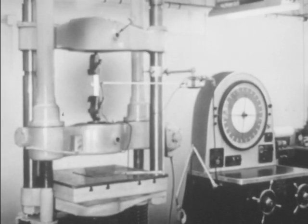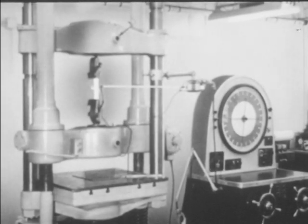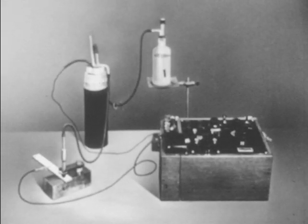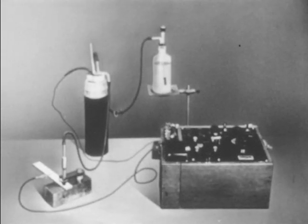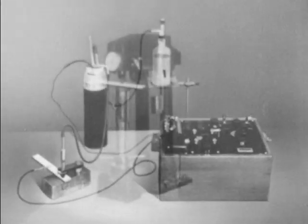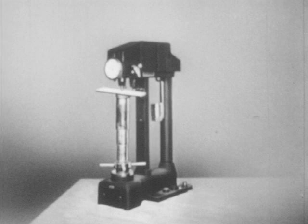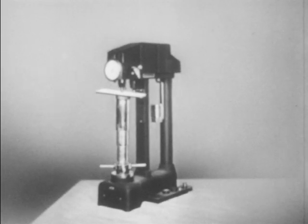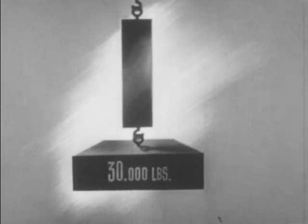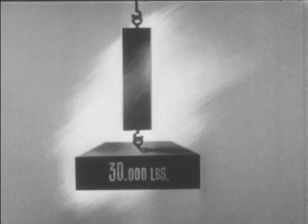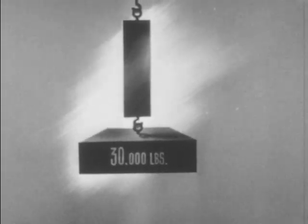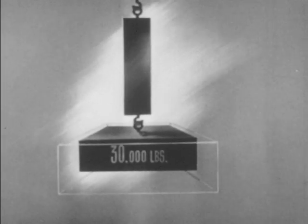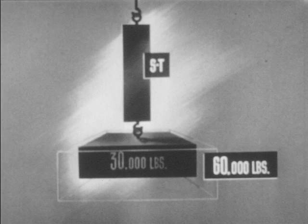If we take sample tests of the properties of a typical aluminum alloy 24S part in the ST, or heat treated and aged condition, we will obtain a measure of the improvement in the metal's physical characteristics as a result of heat treatment. We might find, for instance, that the tensile strength of the aluminum alloy part has risen from 30,000 pounds per square inch to 60,000 pounds per square inch.